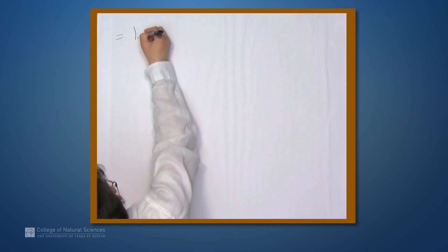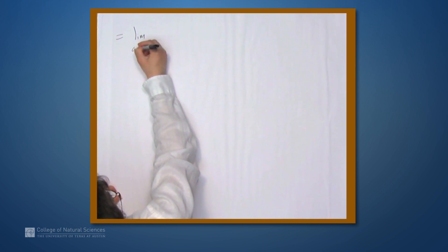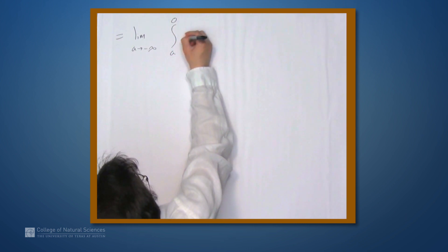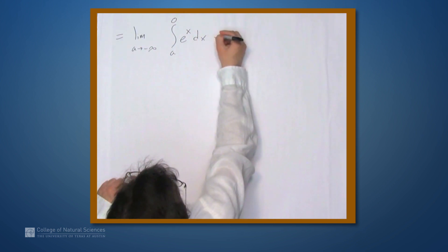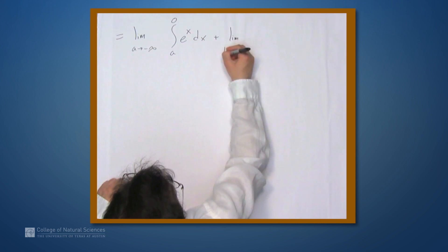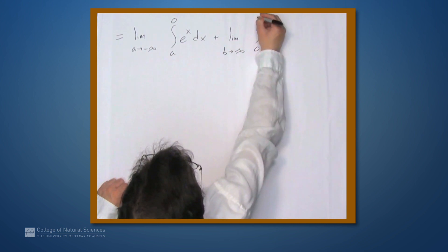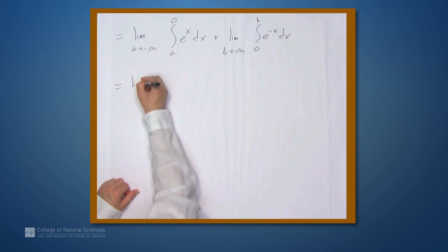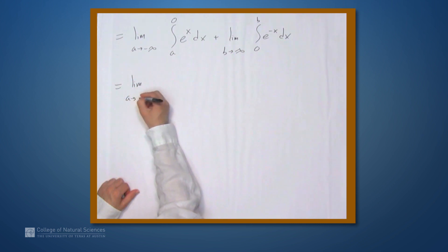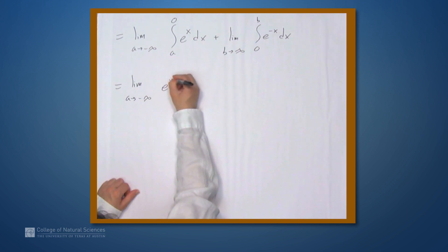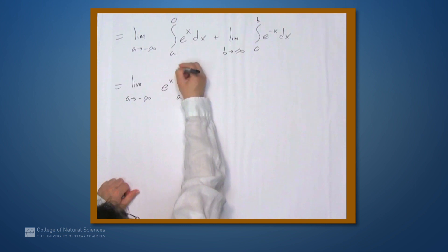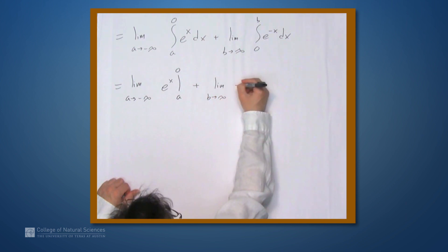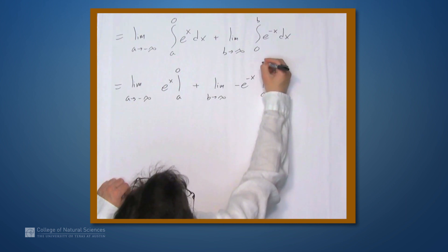Now we can use our familiar antiderivatives to evaluate both of these. By definition, this is the limit as a approaches negative infinity of the integral from a to 0 of e to the x dx, plus the limit as b goes to infinity of the integral from 0 to b of e to the negative x dx. Using antiderivatives, we get the limit as a approaches negative infinity of e to the x evaluated between a and 0, plus the limit as b goes to infinity of negative e to the negative x evaluated between 0 and b.